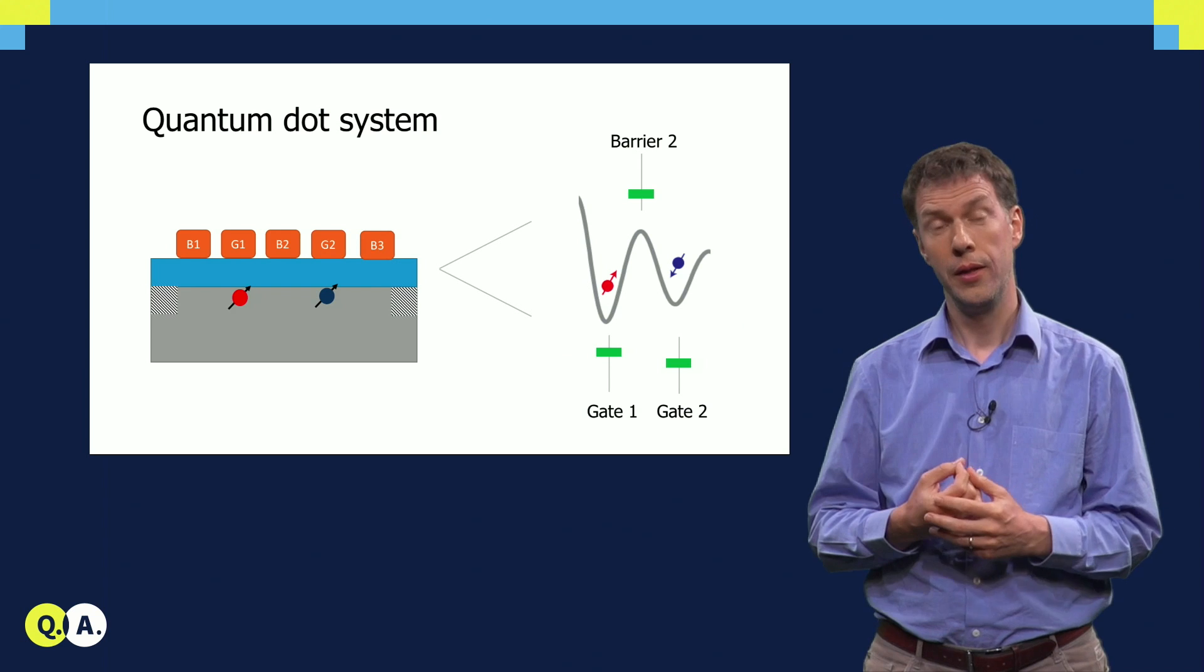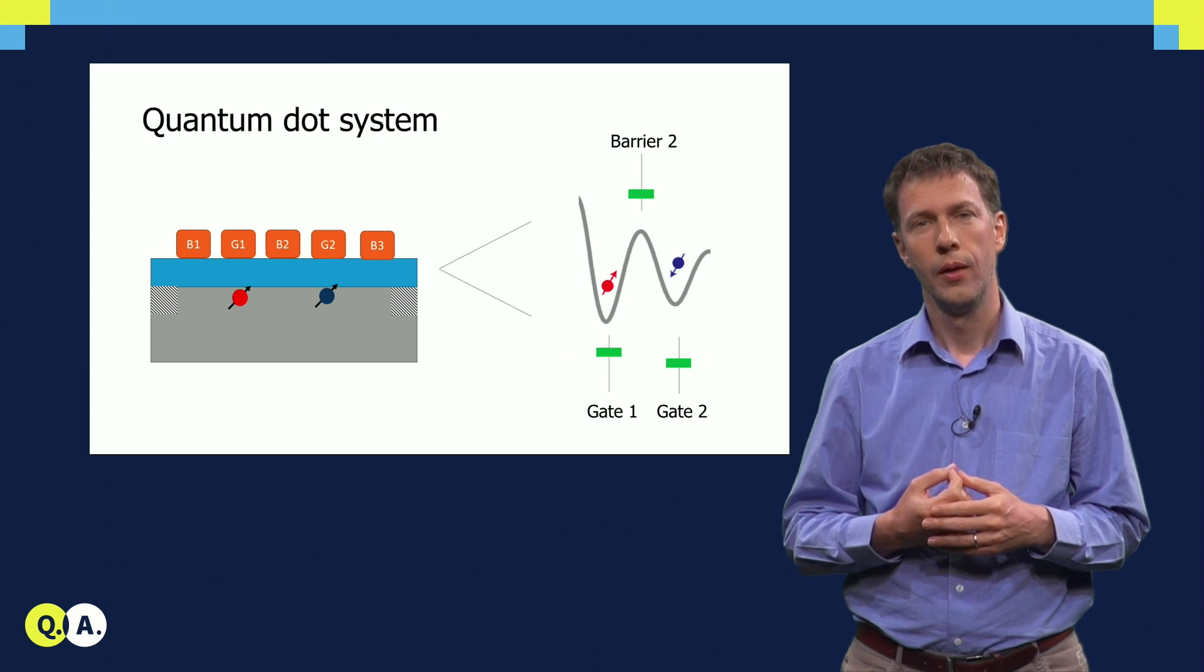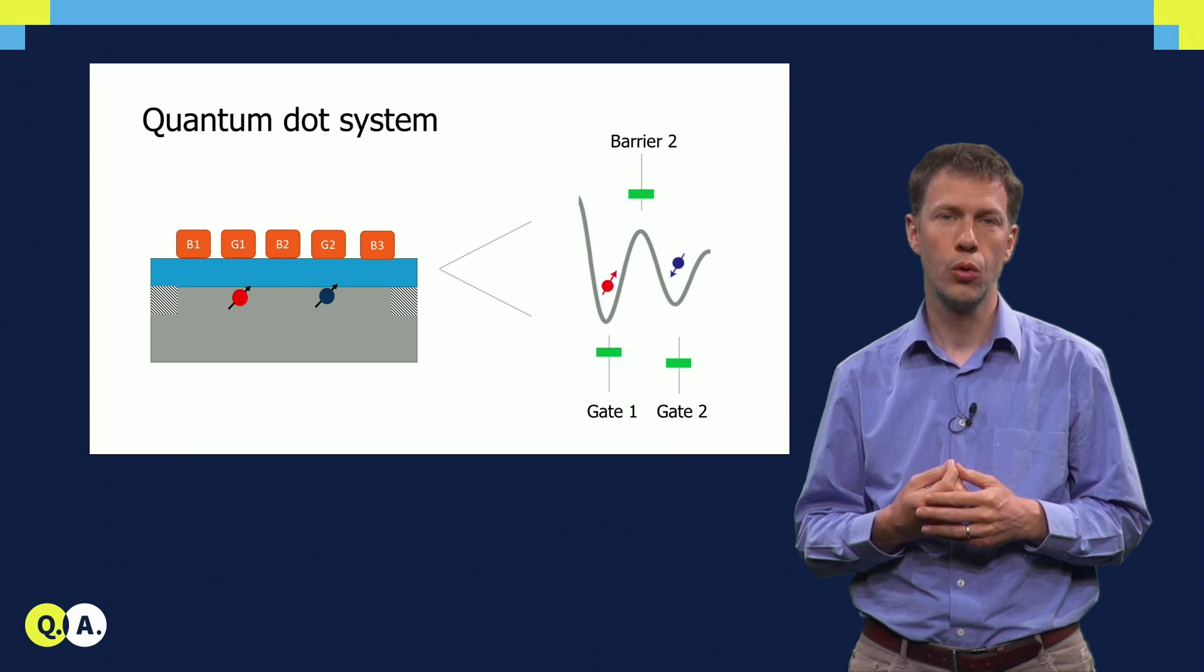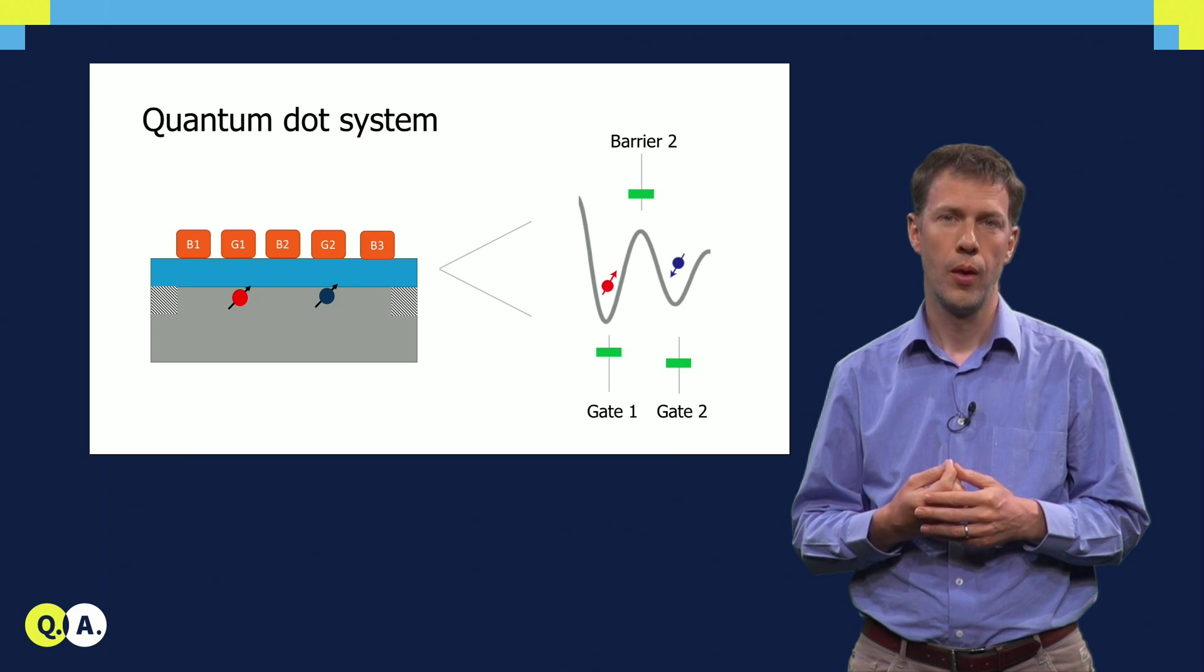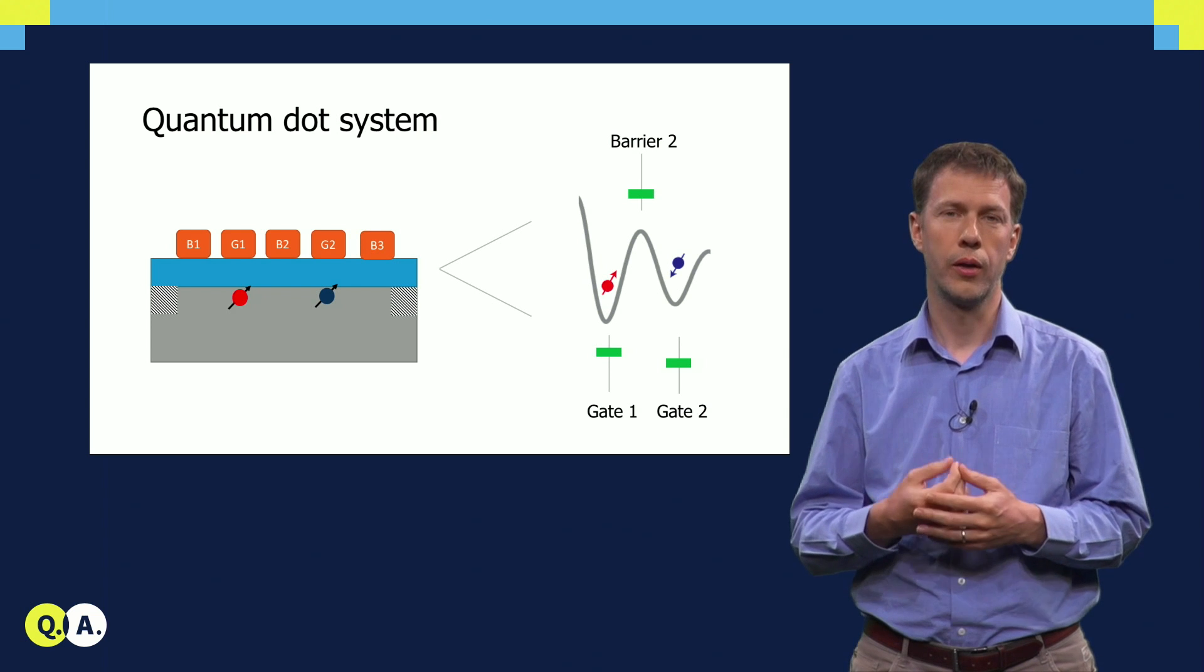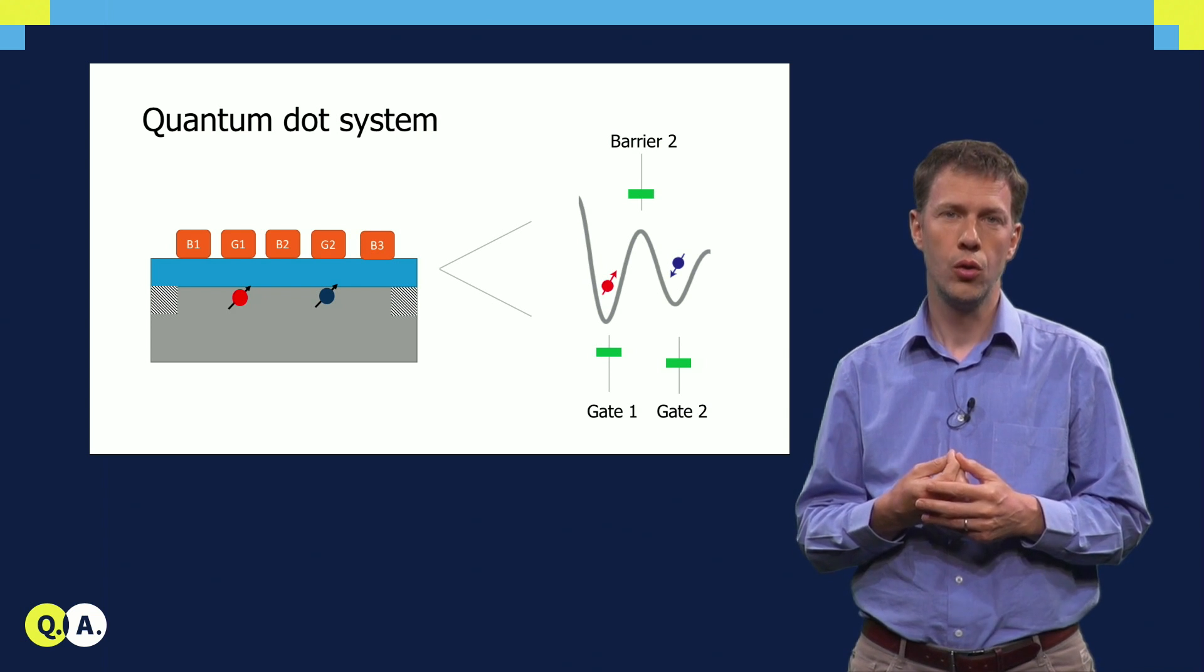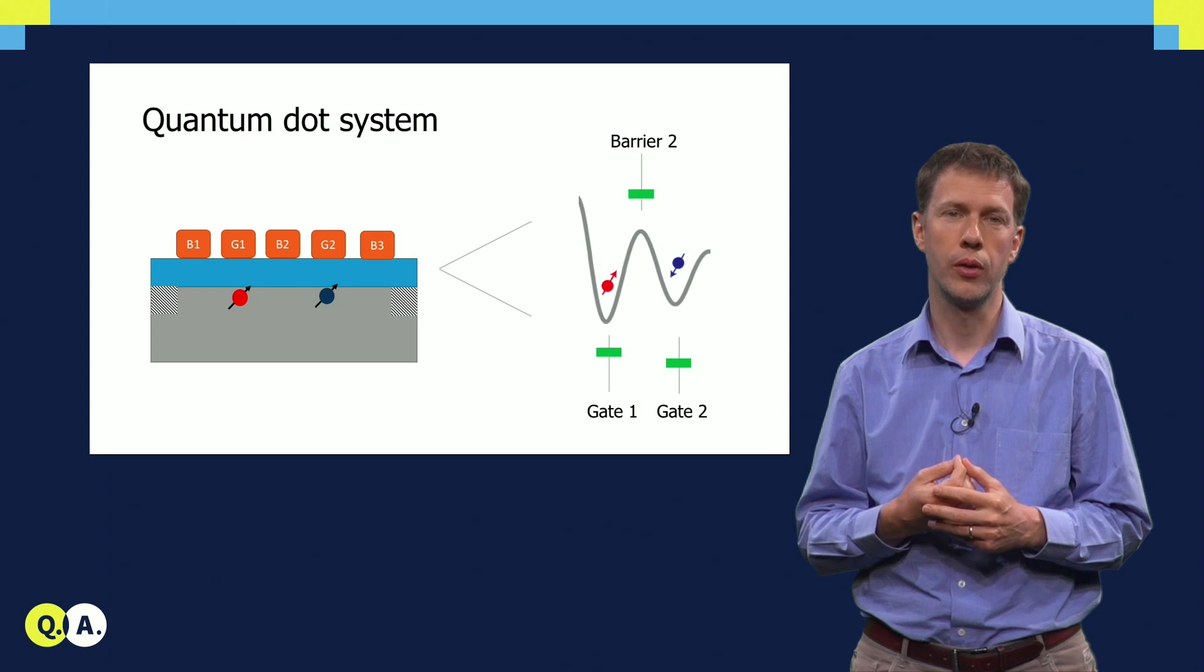Let's look at an example of two quantum dots. In this case, we need an additional gate in between the two quantum dots to control their coupling. By lowering the voltage on this tunnel barrier gate, we can tune the electrical potential in such a way that the two electrons are well isolated from each other.